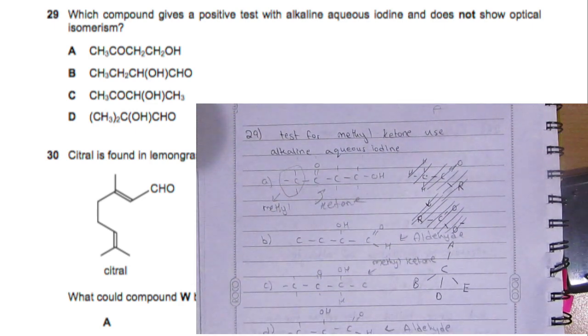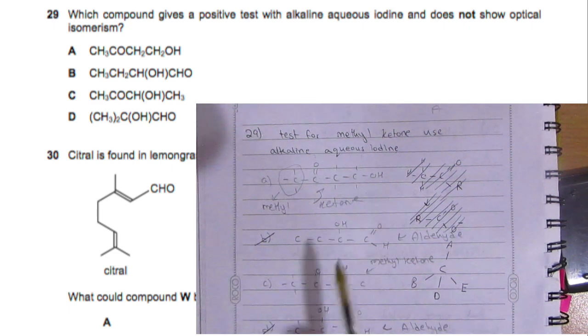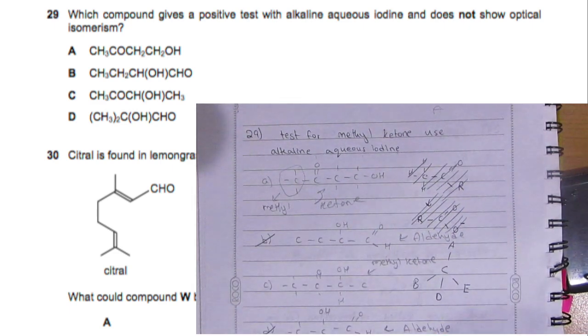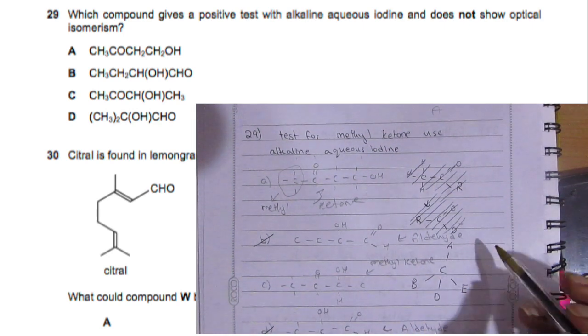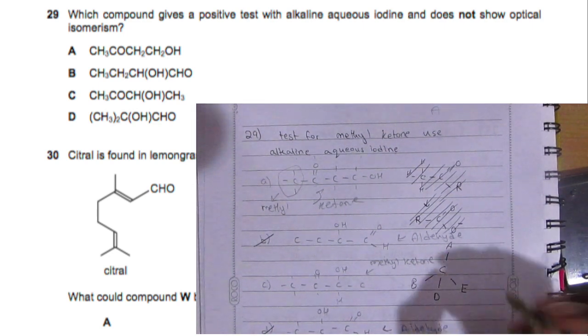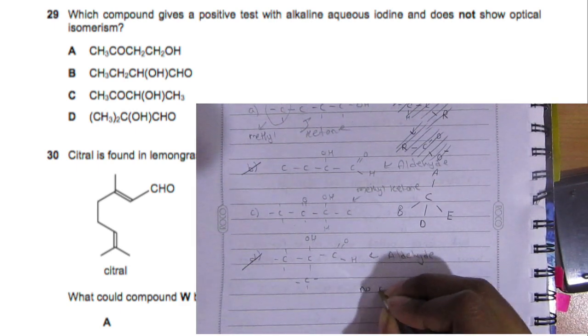So that would mean that D and B are out. So now we're trying to find which one does not show optical isomerism - so not a chiral center, so no chiral center and no cis-trans isomerism.